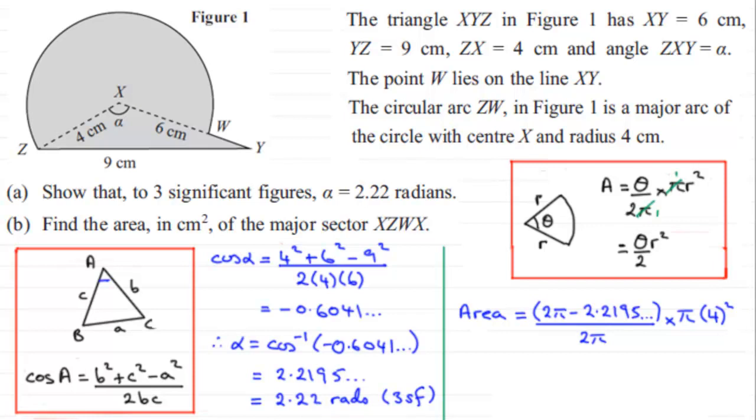And so you've just got to put this through your calculator. And if you do this, you should find you get 32.5094 and so on. And if we round this to say three significant figures, it's going to equal 32.5 centimetre squares to three significant figures.